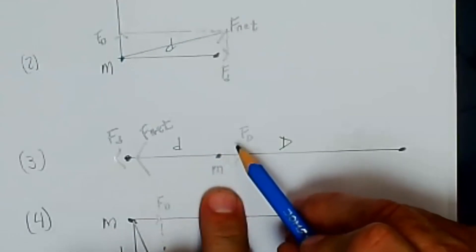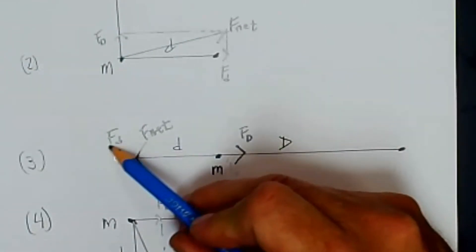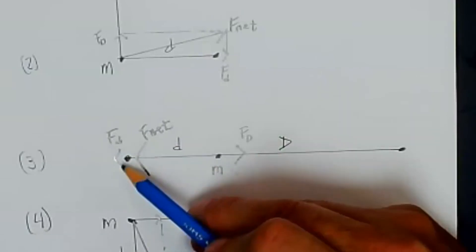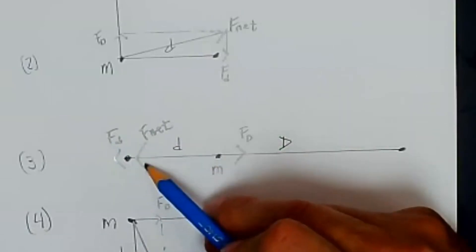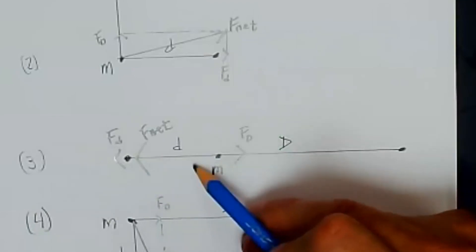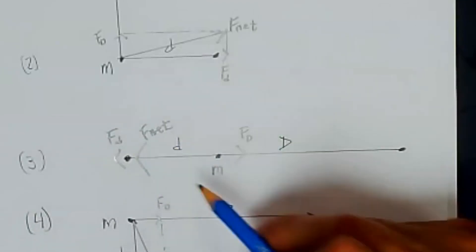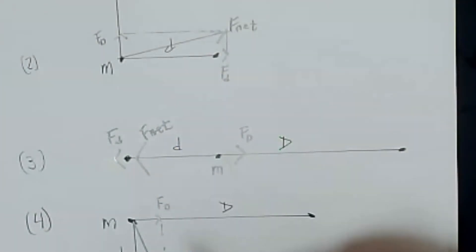So this vector is subtracted from this vector to give me a net force that is less than F sub little d. And there it is right there. There's my net gravitational force from those two particles.